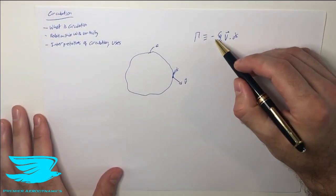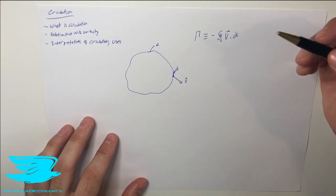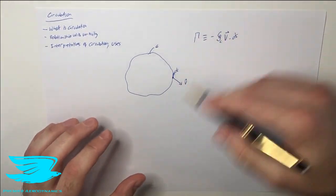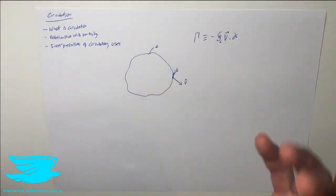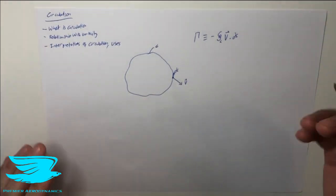So we put a negative here first of all, because circulation we typically say if it's going clockwise then it's positive, counterclockwise it's negative. That's just the notation that we use.